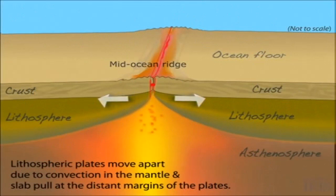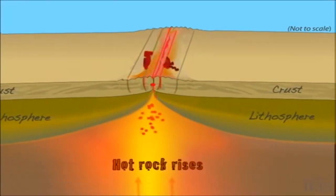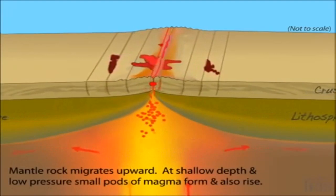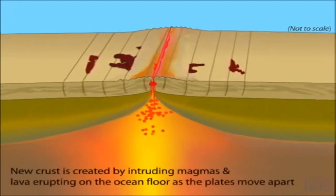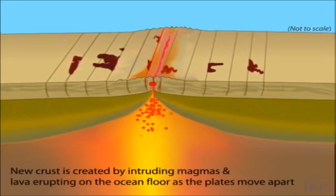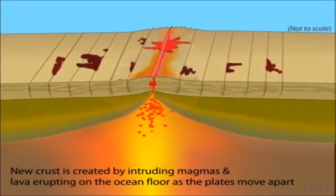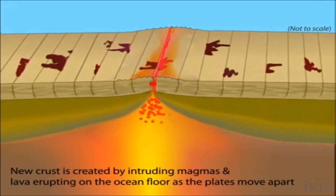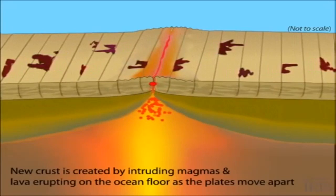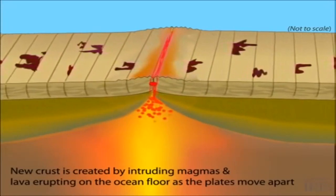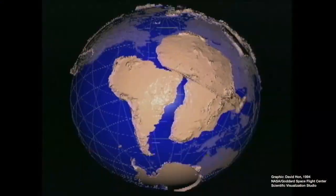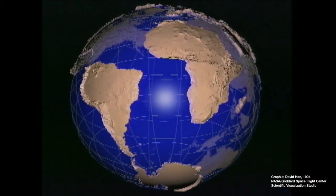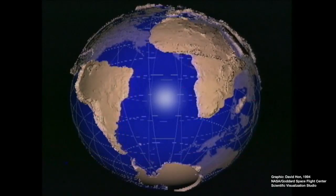Most divergent boundaries are situated along underwater mountain ranges called oceanic ridges. As the plates separate, new materials from the mantle ooze up to fill the gap, slowly cooling to produce new ocean floor. The spreading rate at these ridges may vary from 2 to 20 centimeters per year. The Mid-Atlantic Ocean Ridge is an example of a spreading center, which causes the divergence of the South American plate and the African plate.